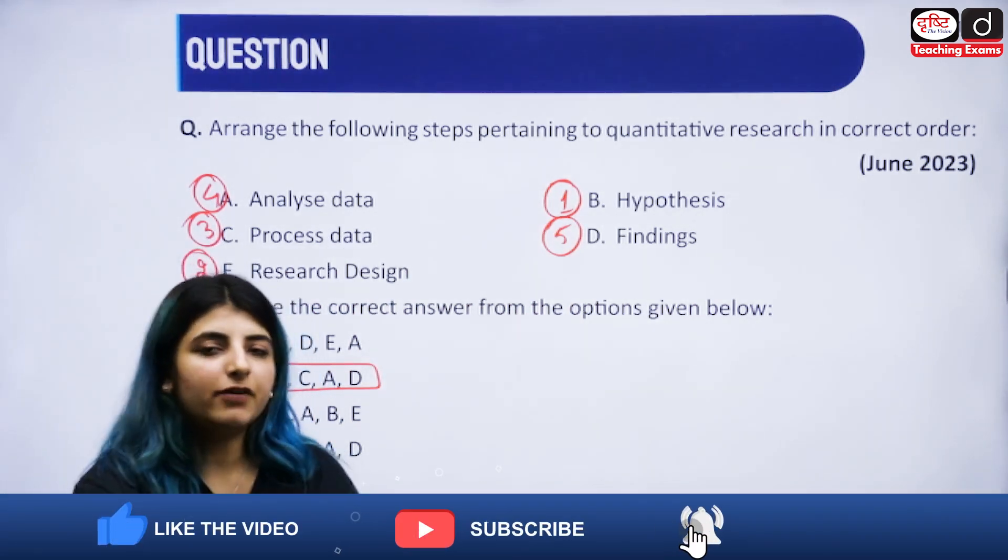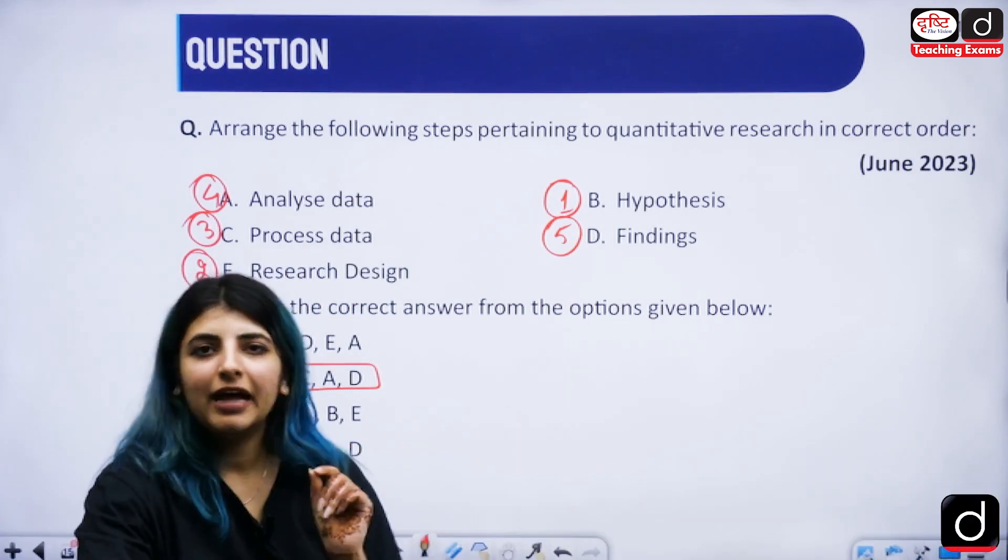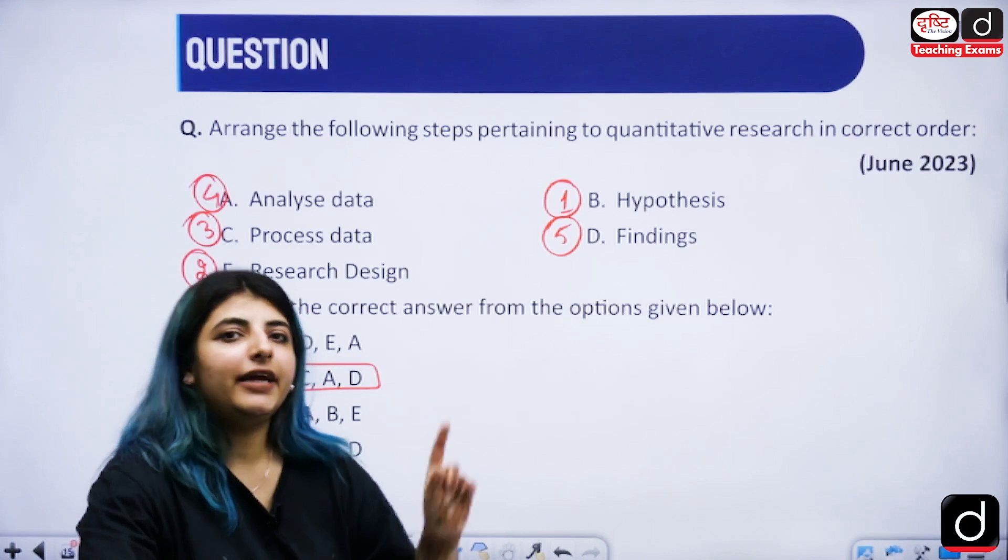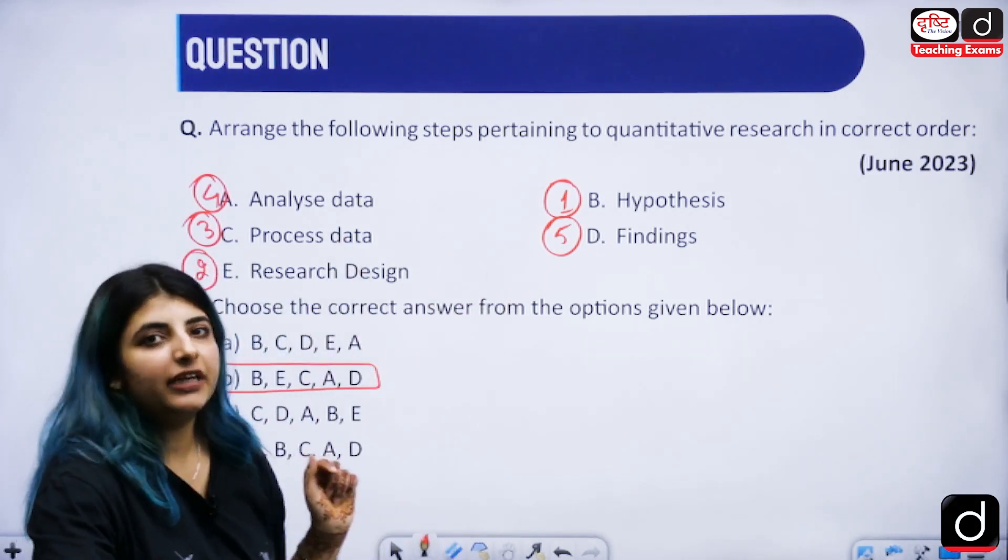Then later on fifth step includes you are going to cite the findings. You are going to write the findings, whether your hypothesis is matching or not matching. So you are going to agree and move forward with these particular steps in the quantitative research part.